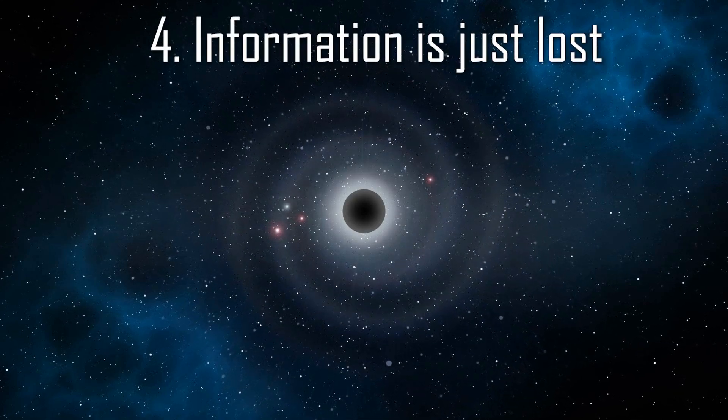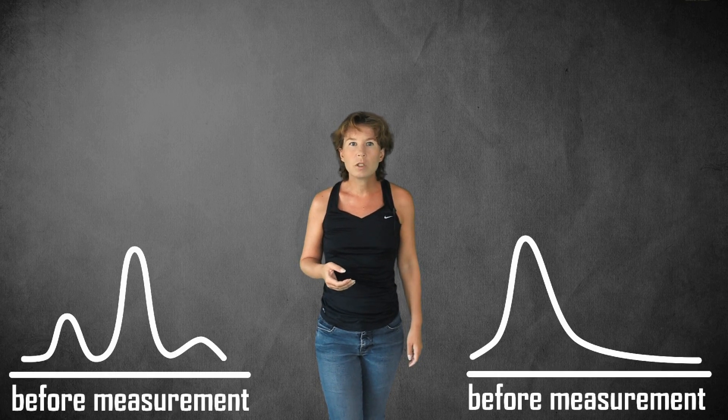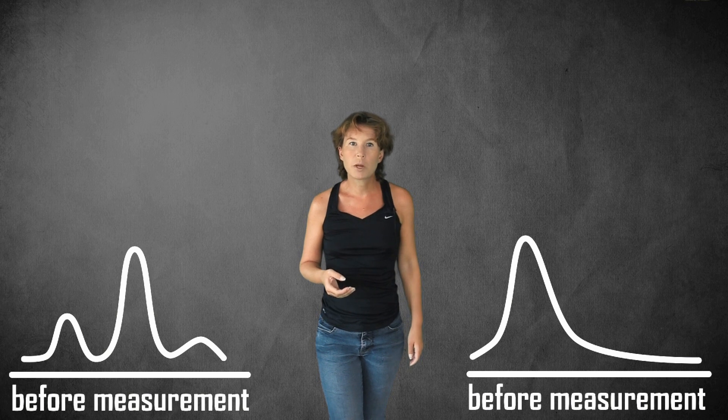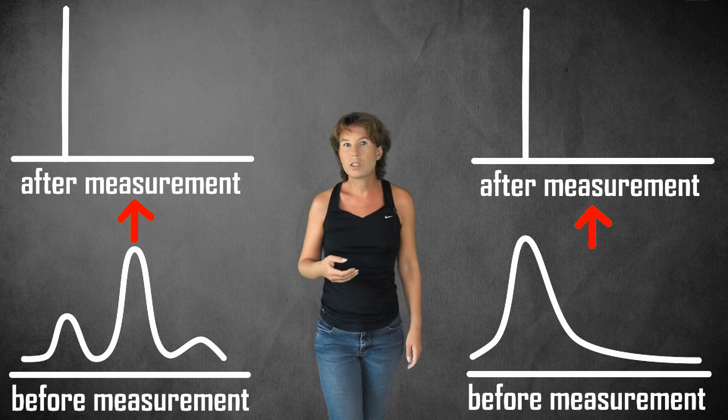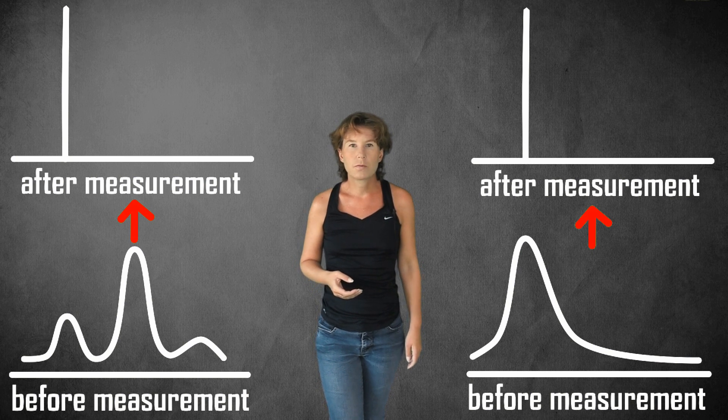Fourth, information is just lost. Black hole evaporation, it seems, is irreversible, and that irreversibility is inconsistent with the dynamical law of quantum theory. But quantum theory has its own irreversible process, which is the measurement. And so, some physicists argue that we should just accept black hole evaporation is irreversible and destroys information, not unlike quantum measurements do. This option is not particularly popular because it is hard to include additional irreversible processes in quantum theory without spoiling conservation laws.